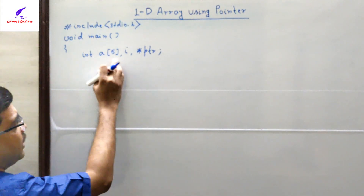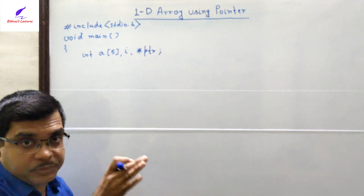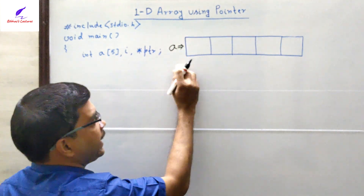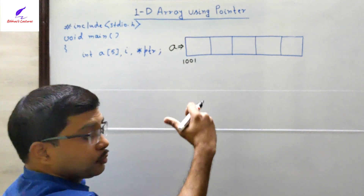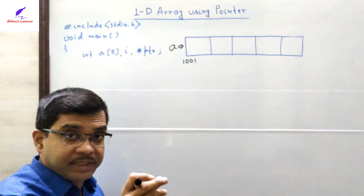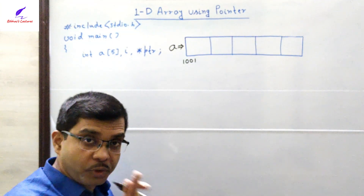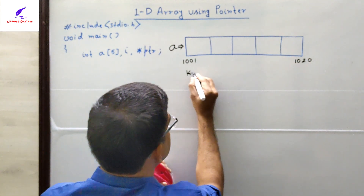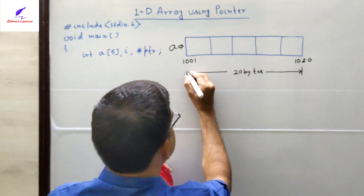After compiling, the compiler allocates memory for the 1D array 'a'. Looking at the memory map: the array starts at address 1001. Since we are working in a 32-bit compiler, a single integer takes 4 bytes. With array size 5, that is 5 × 4 = 20 bytes of contiguous memory — from address 1001 to 1020.